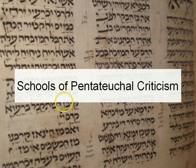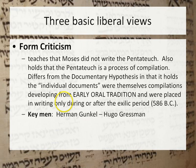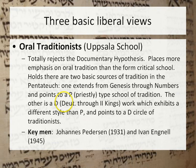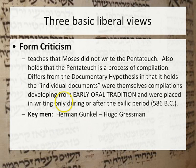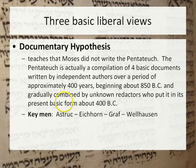After this prehistory, we get three basic liberal schools of Pentateuchal criticism: the documentary hypothesis, form criticism, and oral traditionists. The documentary hypothesis teaches that Moses did not write the Pentateuch — it is a compilation of four basic documents written by independent authors over about 400 years beginning around 850 BC, gradually combined by unknown redactors and put in its basic form about 400 BC.